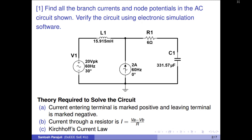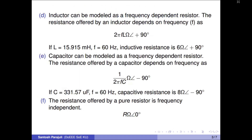C: Sum of entering currents at a node is always equal to sum of outgoing currents through that node. D: Inductor can be modeled as a frequency-dependent resistor. At 60 Hz, a 15.915 mH inductor offers a resistance of 6 ohms with 90 degrees phase shift between current and voltage. Inductor always introduces plus 90 degrees phase shift.